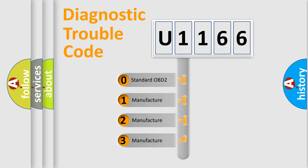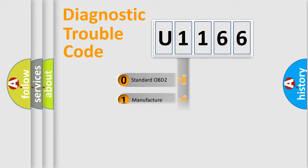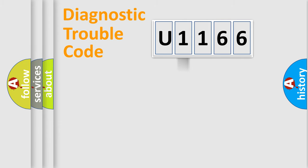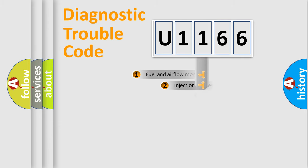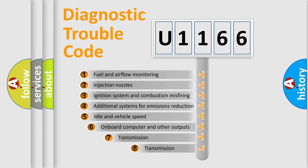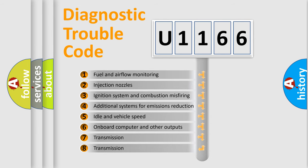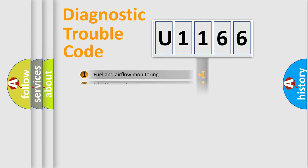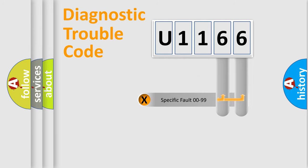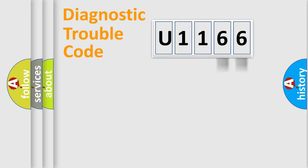If the second character is expressed as zero, it is a standardized error. In the case of numbers 1, 2, or 3, it is a more specific expression of a car-specific error. The third character specifies a subset of errors, and only the last two characters define the specific fault of the group.